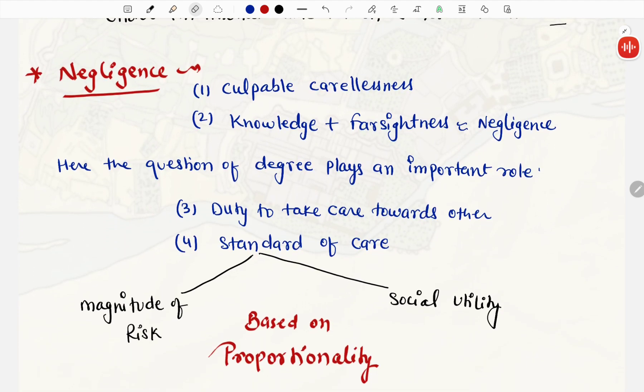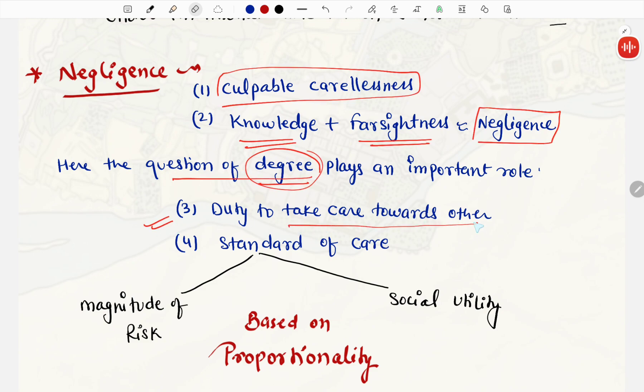Negligence ke andar hi, do aur part aate hai, culpable carelessness, aur second aate hai, knowledge plus farsightedness. Negligence ke andar humko pata hai, ki question of degree plays an important role, degree matter karti hai, degree of intention, in negligence ke andar. Aur negligence ko, kaise define karti hai, duty to take care towards other. Aapke ek duty hai, kisi ki dekhbhal karne ki, aur aap woh na karein, to woh aata hai, comes under negligence.